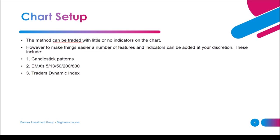The method can be traded with little or no indicators on the charts. If you become proficient, you'd see that indicators may be of no use. However, to make things easier, a number of features and indicators can be added at your discretion. These include candlestick patterns, exponential moving averages with periods 5, 13, 50, 200, and 800, and the last one being the Traders Dynamic Index.